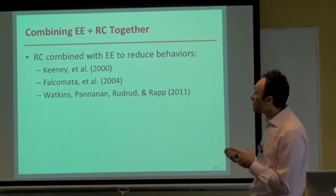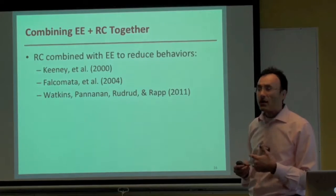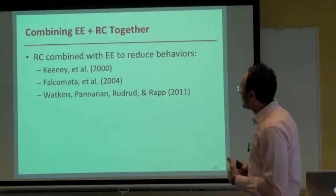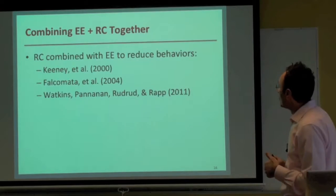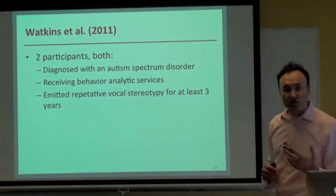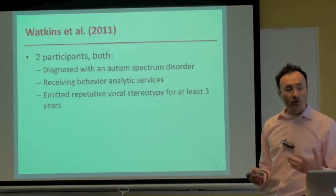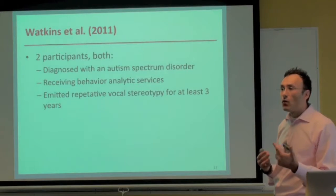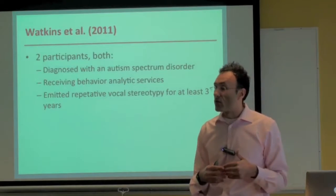One limitation of those studies was only one participant each. So in our 2011 publication, we wanted to extend this with two participants. Both were diagnosed with autism spectrum disorder and receiving behavior analytic services. They had been emitting repetitive vocal stereotypy for the previous three years — saying things like 'Can I search Google now? Can I search Google now?' or 'My doll is evil. My doll is evil.' They would repeat sentences or fragments of sentences.